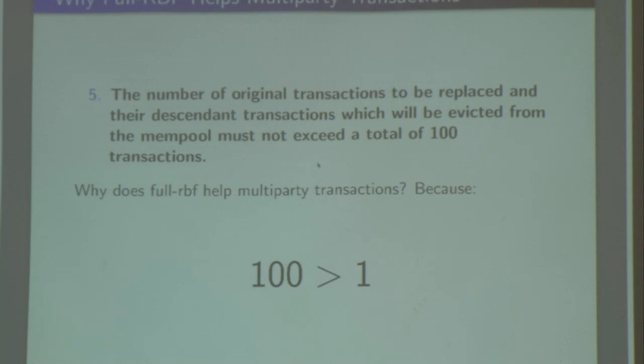These attacks apply to CoinJoins and Lightning channel opens. All these attacks are things where I can also attack by just not fully participating in the protocol. CoinJoins are particularly vulnerable because they are two-phase protocols, but if all I do is create a bunch of outputs and DOS attack people by advertising those outputs and refusing to go along with the protocol, I've also wasted time. We just have to do better, and full RBF does.